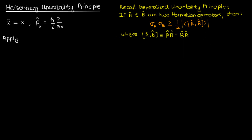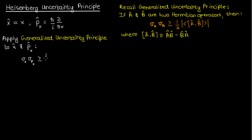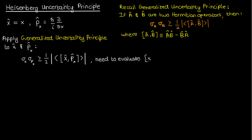Now let's apply this generalized uncertainty principle to our momentum and position operators. In that case we'll have σ_x times σ_{p_x} is greater than or equal to half times the magnitude of the expectation value of the commutator between x-hat and p_x-hat. So all we have to do to prove the Heisenberg uncertainty principle is to evaluate the right-hand side — the commutator of x-hat and p_x-hat.